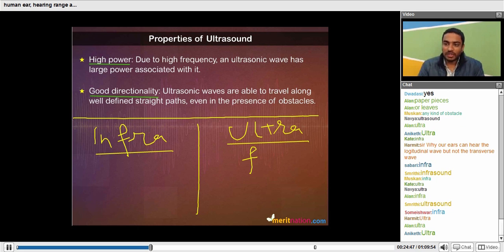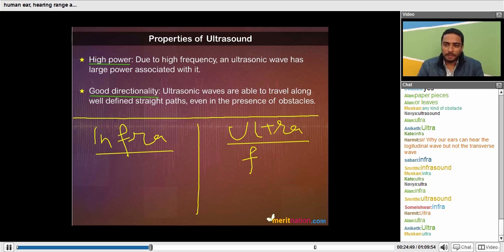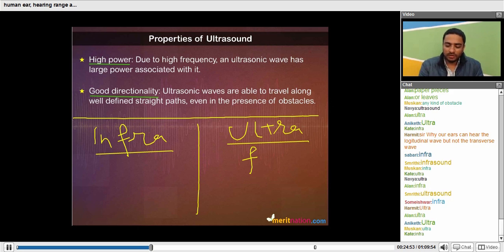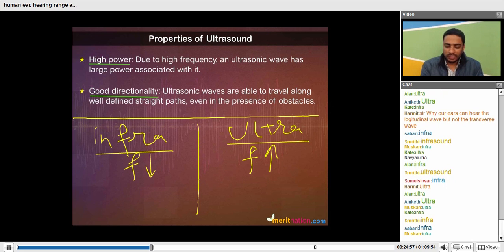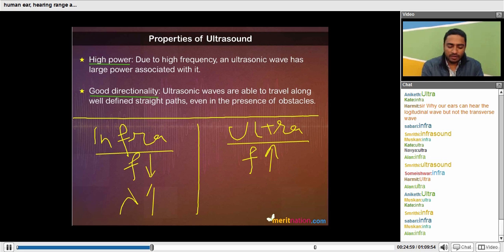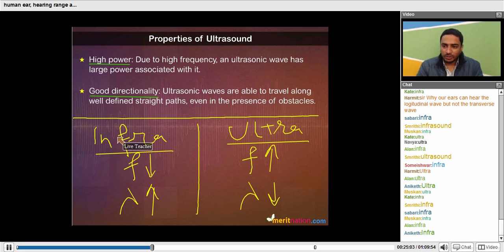And which one will have a greater wavelength, now give me the answer. So which one will have a greater wavelength? Infra will have a greater wavelength, right. Ultra will have smaller wavelength.